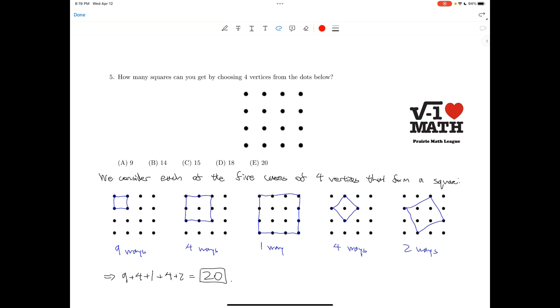So for problem number 5, we need to find the number of squares that we can get by choosing 4 vertices from the 16 dots below. Now this is a classic problem in counting, and the key is to find all 5 cases of possible types of squares.